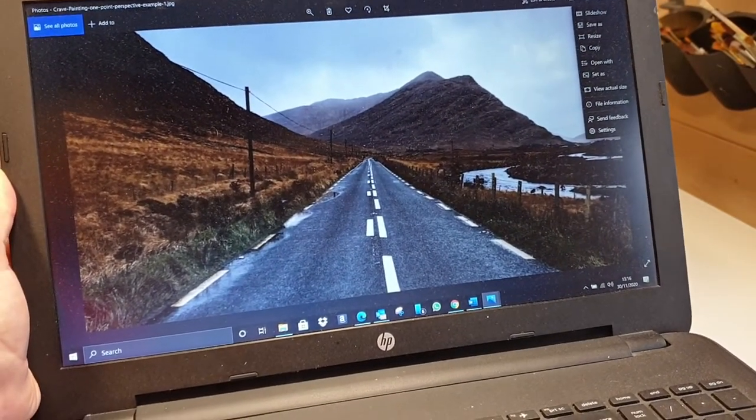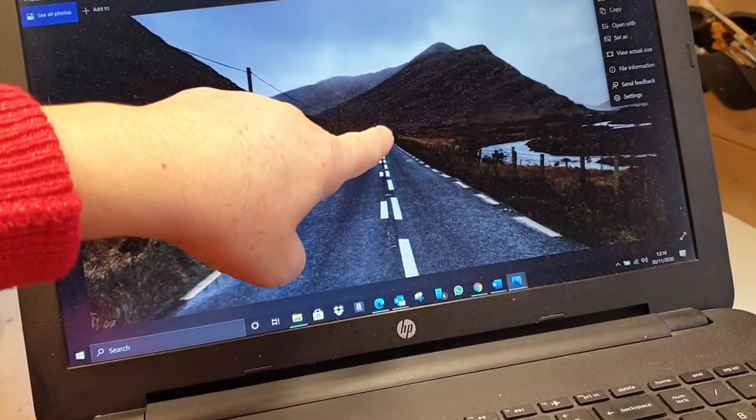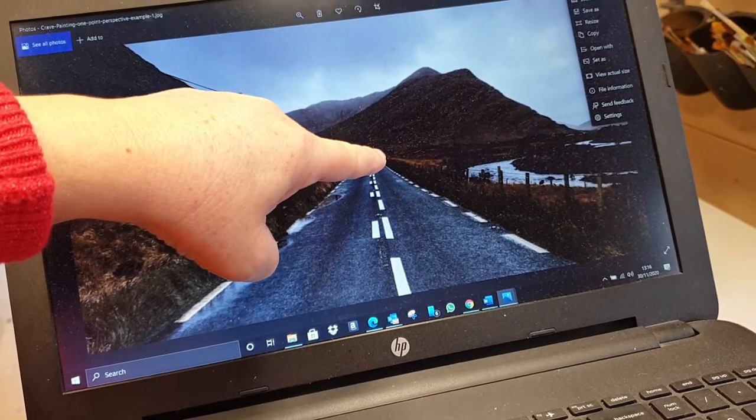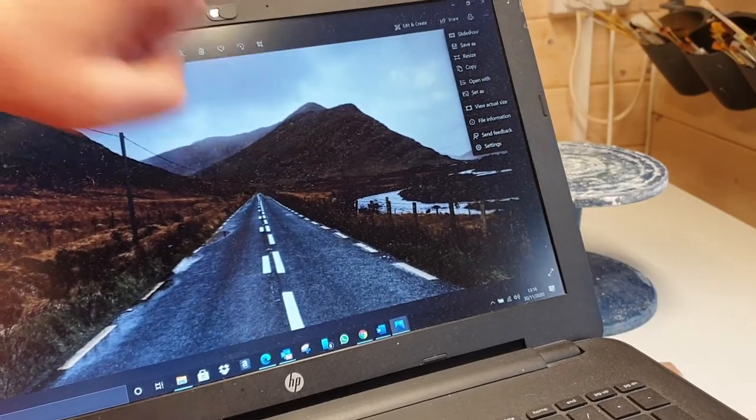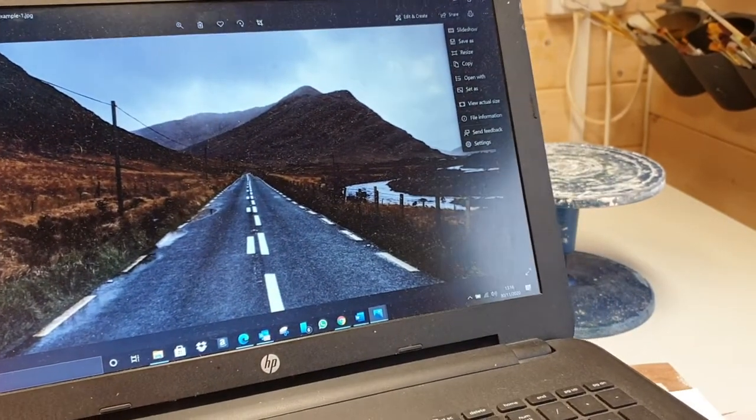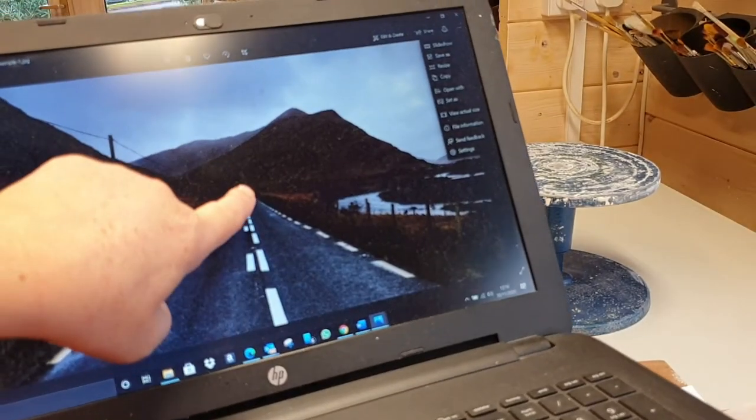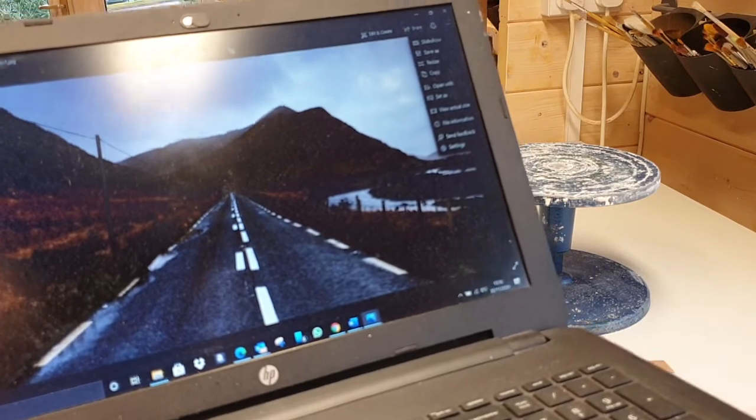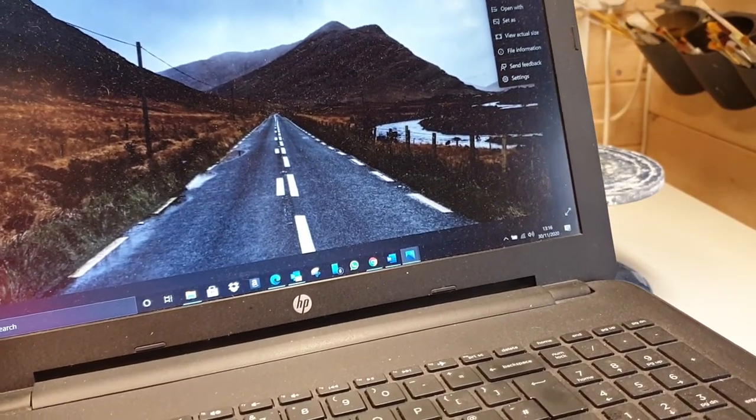One-point perspective is where something vanishes off to a vanishing point and you have one point where everything is going to. The main thing is you have one thing vanishing into the front. We will be covering two and three-point perspective in a later session.